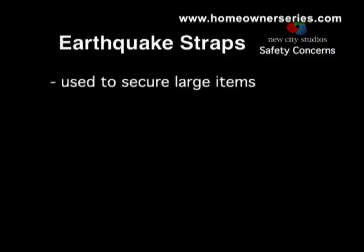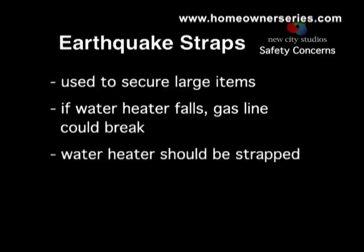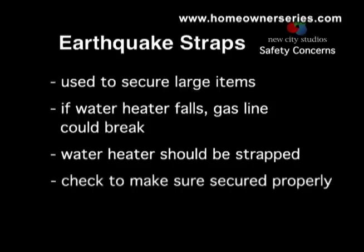Earthquake straps are used to secure household items such as the water heater or other large objects from falling over during an earthquake. When a water heater falls, it usually disconnects or breaks the gas line attached to the heater, releasing gas and starting a fire. It is important that the earthquake straps are located at the upper portion and around the lower portion of the water heater, and that they are big enough to secure it from falling over. The straps must also be securely fastened into the studs in the walls so that in a violent earthquake they can keep the water heater in place. Check to ensure that all large devices and furniture, like tall bookcases and items that may block a door, are securely strapped in place.